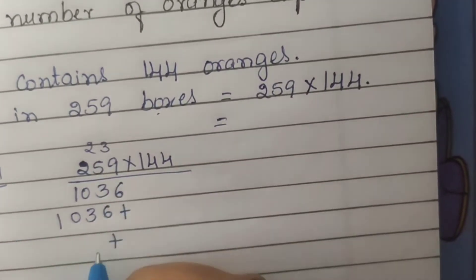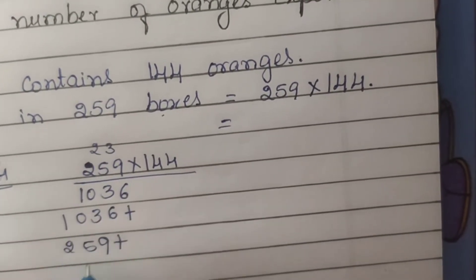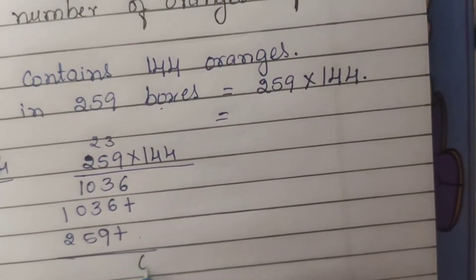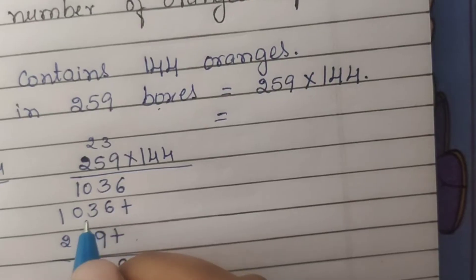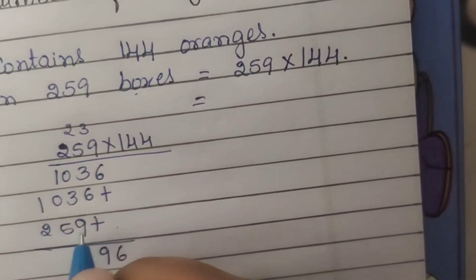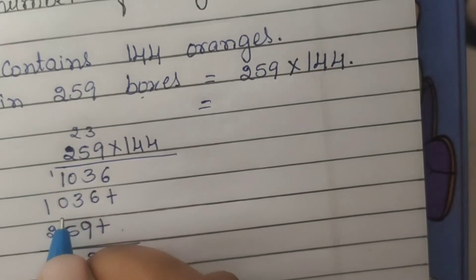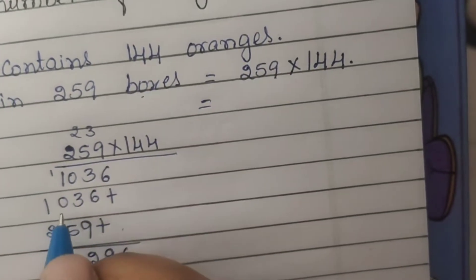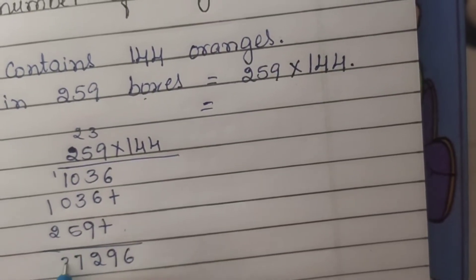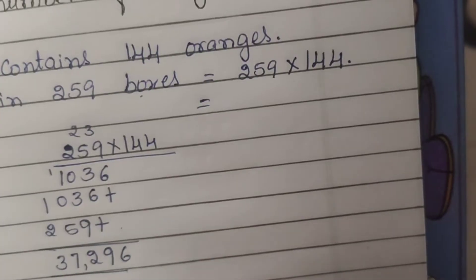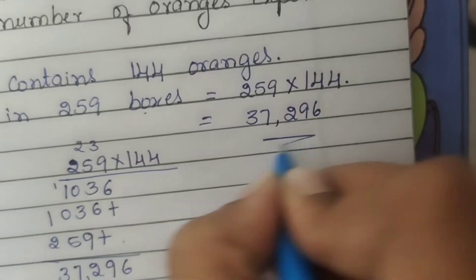Adding the partial products: 6, 3 plus 6 is 9, 0 plus 3 is 3, 3 plus 9 is 12 — write 2 and carry 1, 1 plus 1 is 2, 2 plus 0 is 2, 2 plus 5 is 7, then 1 plus 2 is 3. So the total number of oranges is equal to 37,296.